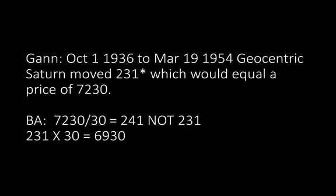Gann, October 1, 1936 to March 19, 1954 — geocentric Saturn moved 231 degrees, which would equal a price of 7,230. BA: 7,230 divided by 30 equals 241, not 231. 231 times 30 equals 6,930.